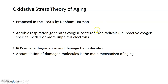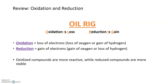In the 1950s, Harmon proposed a theory known as the oxidative stress theory of aging. It was known at this time that aerobic respiration in the mitochondria generated what are called oxygen-centered free radicals, or what we now know as reactive oxygen species — an oxygen that has one or more unpaired electrons. ROS were allowed to escape degradation in the cell and then damage biomolecules. According to this theory, it was the accumulation of damaged biomolecules, like proteins, that was the main mechanism for aging. We now know this is not the only mechanism by which aging occurs, but it is an important one.